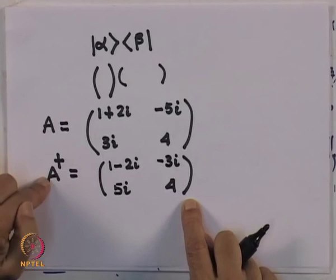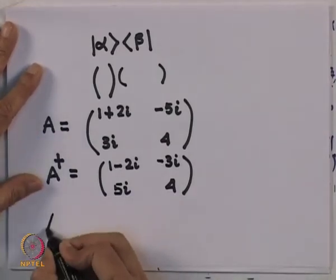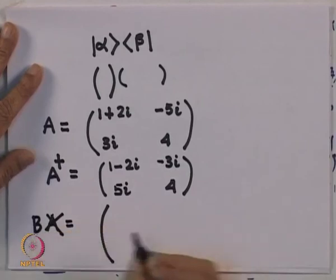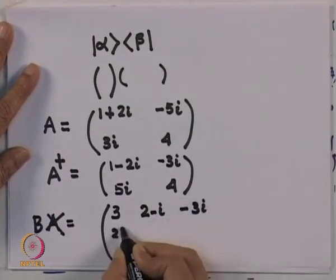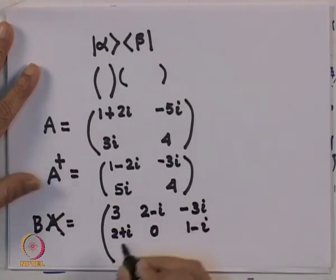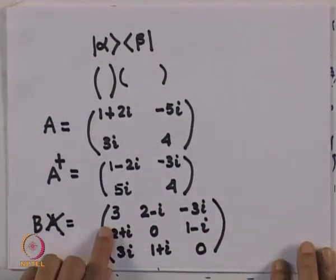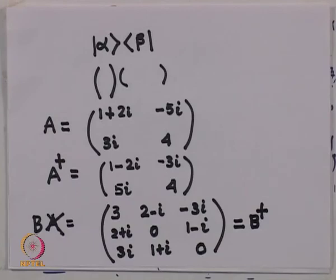Suppose instead we look at a matrix B = (3, 2−i, −3i; 2+i, 0, 1−i; 3i, 1+i, 0). You can observe a symmetry: this matrix and its adjoint are the same — in other words, this is a Hermitian matrix. We will continue with the matrix representation of linear operators.